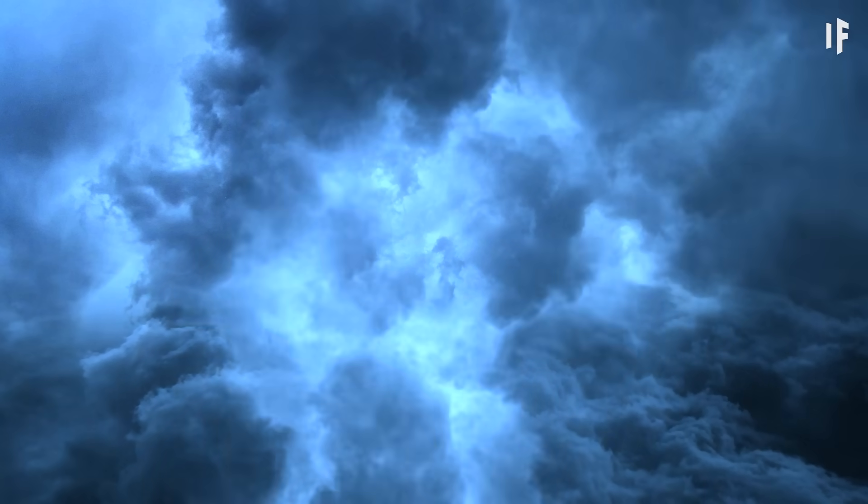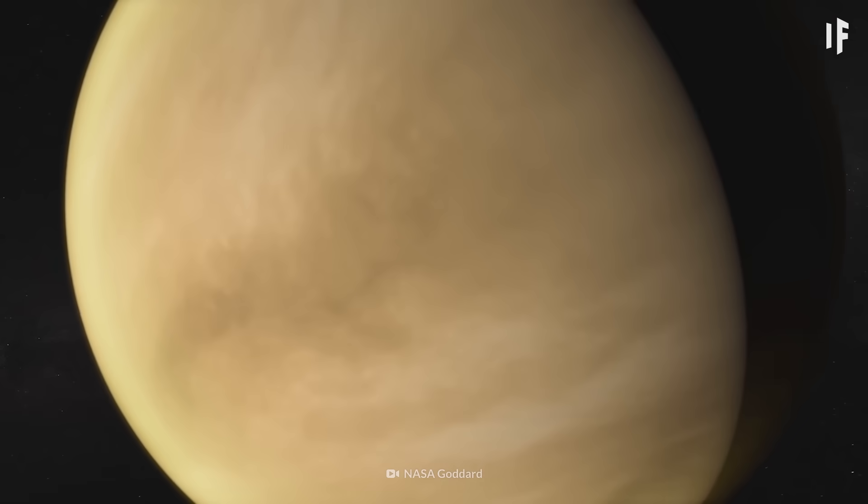With an average daytime temperature of nearly 1,100 degrees Celsius, this planet is twice as hot as Venus. And Venus is the hottest planet in our Solar System.